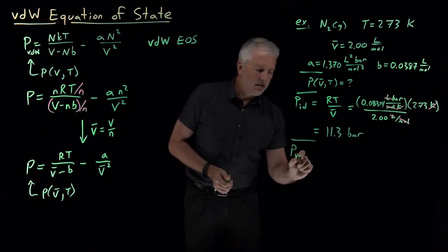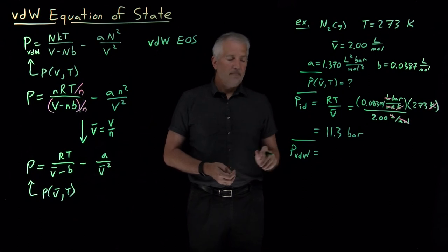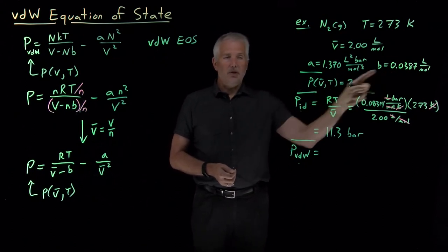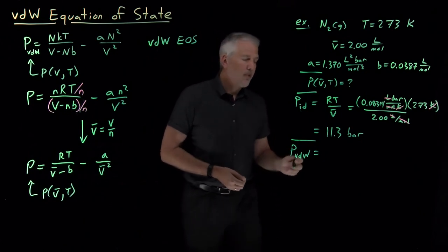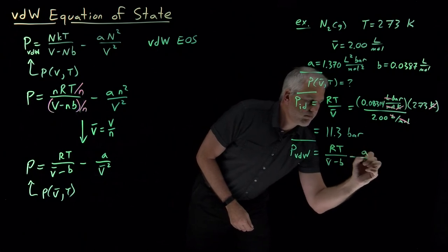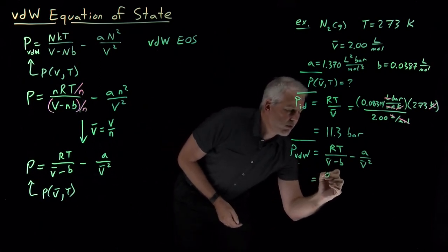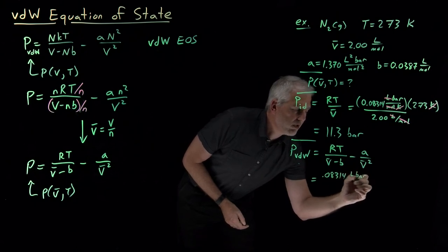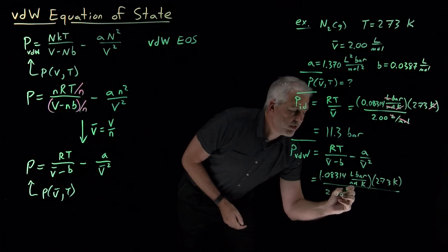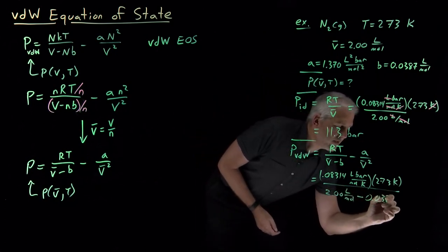The more interesting question is: what is the Van der Waals pressure? If the gas behaves as a Van der Waals gas rather than an ideal gas, what's its pressure? We expect the Van der Waals prediction to be more accurate because nitrogen does have some finite molecular volume and some attraction between molecules. Using the Van der Waals equation of state with R = 0.08314 liter·bar per mole·kelvin and T = 273 Kelvin, instead of dividing by 2 liters per mole, we divide by 2 minus 0.0387 liters per mole.